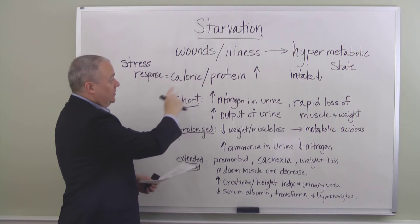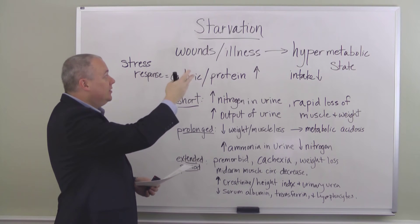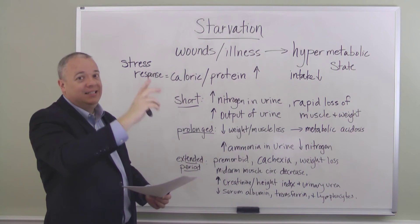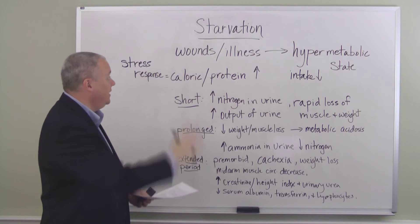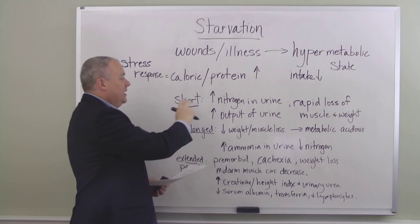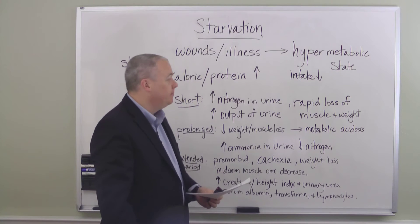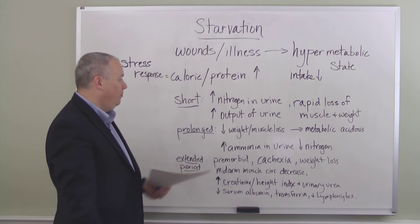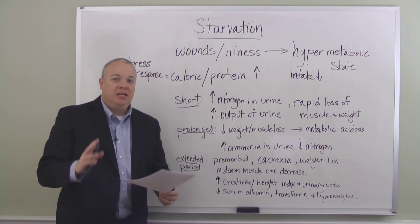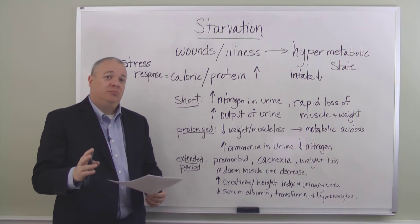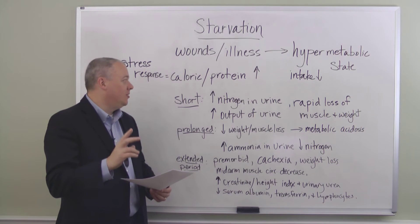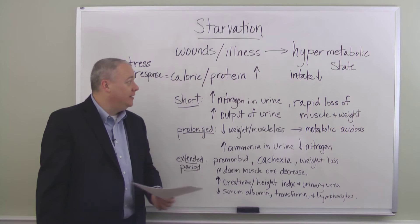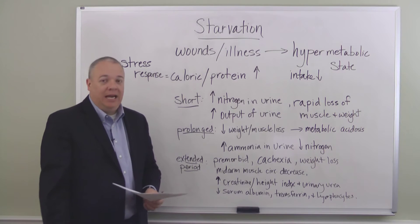Over the short run, if this is not corrected — the wound isn't cured, the illness isn't taken away, the protein and caloric intake isn't increased — over the short run of this state of starvation, what you get is an increase in the nitrogen in the urine, a rapid loss of muscle and weight, and a greater output of urine. So the short-term effects of short-term starvation include a strong increase in nitrogen in the urine, a strong increase in urine output, and rapid muscle and weight loss.